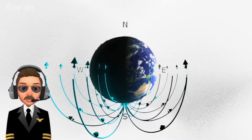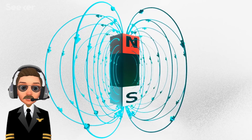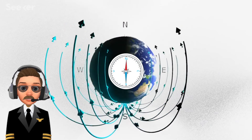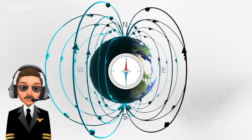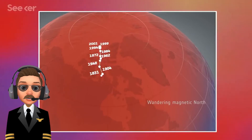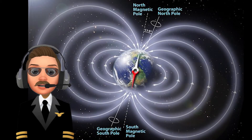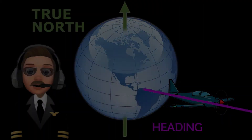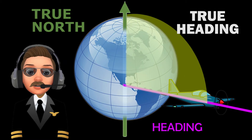The Earth is a big magnet and every magnet has a north and a south pole. The compass, which is the instrument that we have in the plane, always points to the north pole. The magnetic north changes with time — in 1984 it was in Canada and now it is close to Russia. The true north is a fixed point on the Earth where the meridians originate. The angle between the heading and the true north is called true heading.